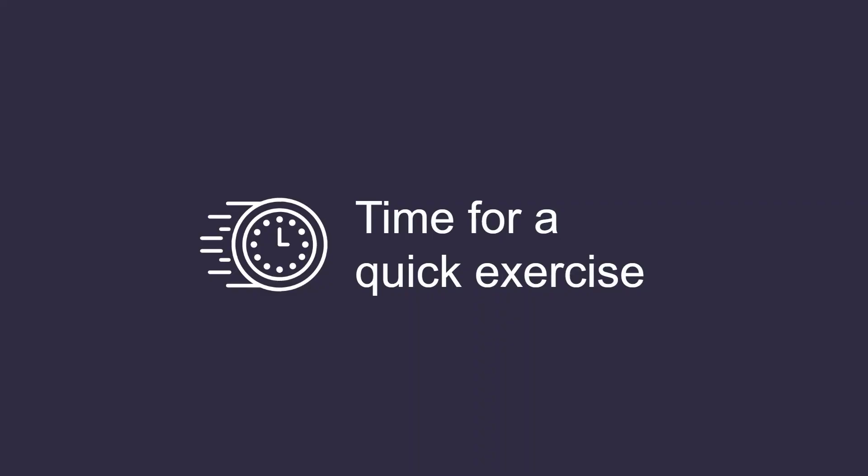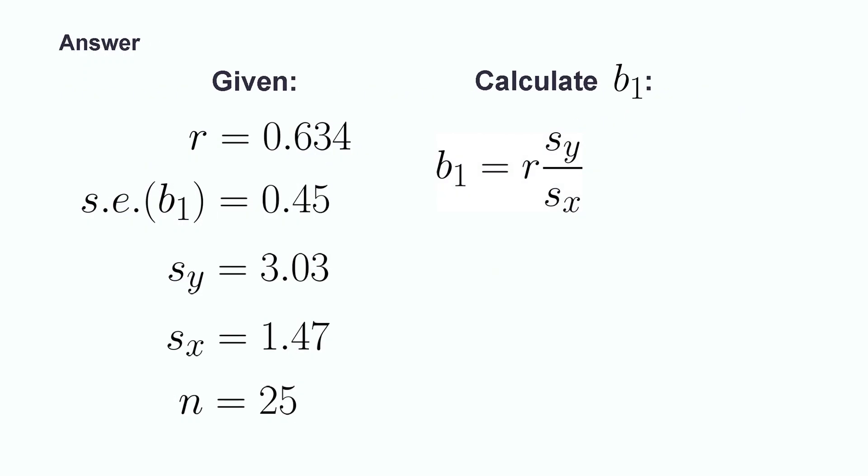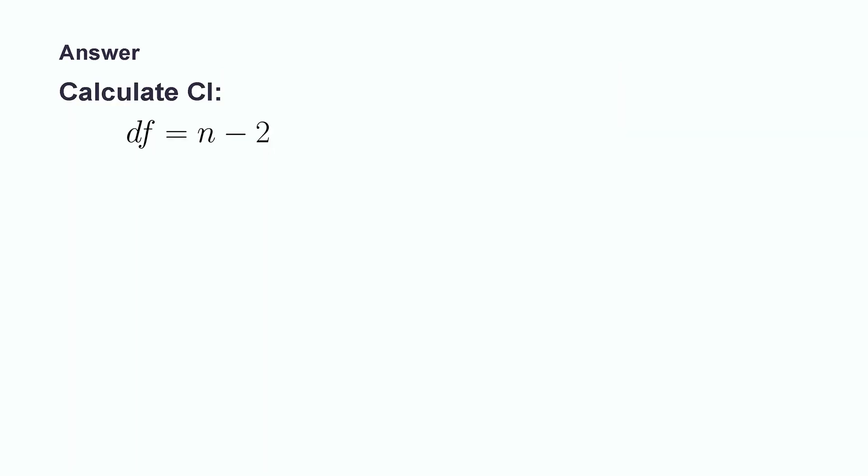Let's see what we've learned by doing a quick exercise. A personal trainer wants to get an estimate of how much weight 25 of his clients are gaining in muscle each month based on how many additional hours each month his clients exercise with him. Construct and interpret a 90% confidence interval to help the trainer determine how much weight his clients are gaining based on time spent exercising with him. Use the following values: r equals 0.634, standard deviation of x equals 1.47, standard deviation of y equals 3.03, and standard error of beta1 equals 0.45. We begin by calculating the value of beta1 using r and the standard deviations of x and y, giving us a value of 1.307.